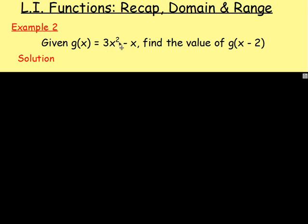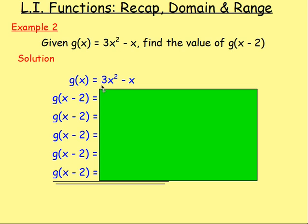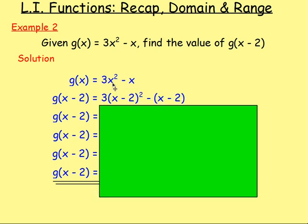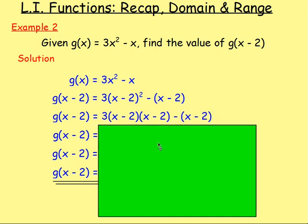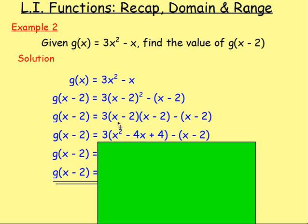Let's try one that's a bit trickier. Given g of x equals 3x squared minus x, find the value of g of x minus 2. Again, that's the function we're starting with: g of x equals 3x squared minus x. But we're replacing x with x minus 2, so on the right hand side, wherever you see an x, replace it with x minus 2. What you're best doing is substituting in, but putting brackets around what you're subbing in. So we've got 3 times x minus 2 squared, then take away and replace x with x minus 2, so take away x minus 2. You could do it any way you want — you could do 3 times x and 3 times negative 2, then multiply that by x minus 2. The way I'm doing it is 3 times x minus 2 times x minus 2.